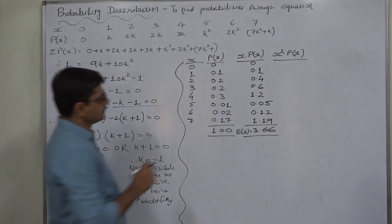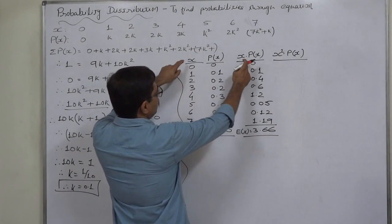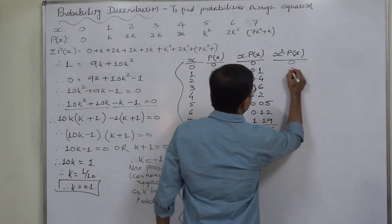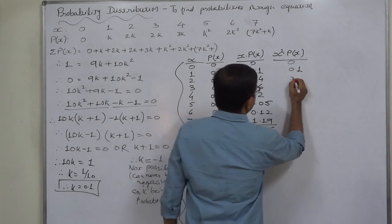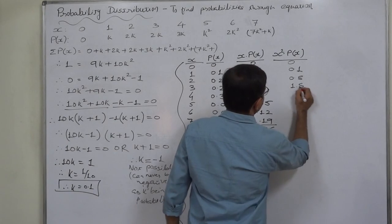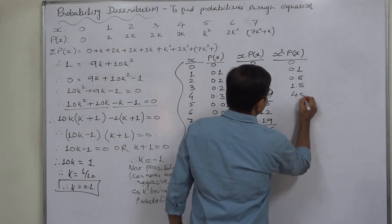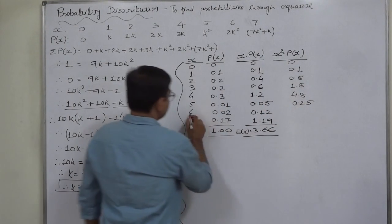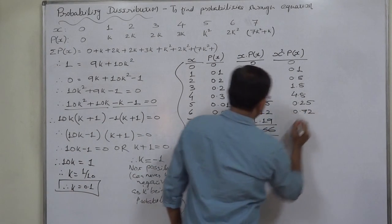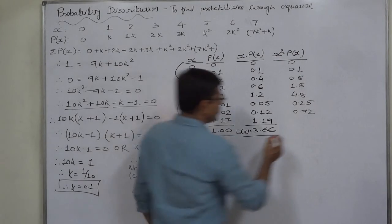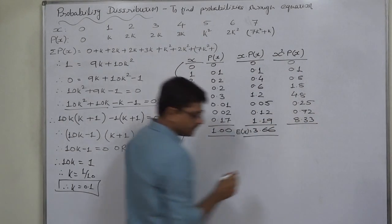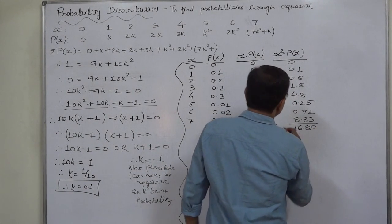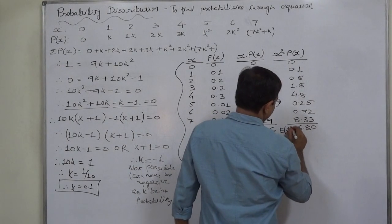Now for X squared times P(X), computed as X times (X times P(X)): 0×0=0; 1×0.1=0.1; 2×0.4=0.8; 3×0.6=1.8; 4×1.2=4.8; 5×0.05=0.25; 6×0.12=0.72; 7×1.19=8.33. The summation of this column comes to 16.8, which is E(X squared).